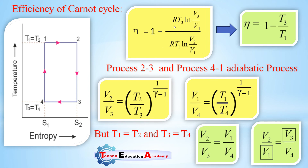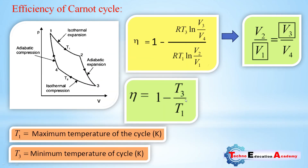Since V3/V4 equals V2/V1, the logarithmic terms ln(V2/V1) and ln(V3/V4) are equal, and R cancels (being a gas characteristic constant). The efficiency simplifies to: efficiency equals 1 minus T3/T1, where T1 is the maximum temperature and T3 is the minimum temperature in the cycle. T1 equals T2 (maximum temperature) and T3 equals T4 (minimum temperature).